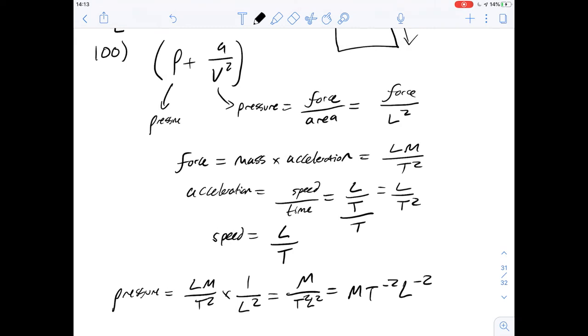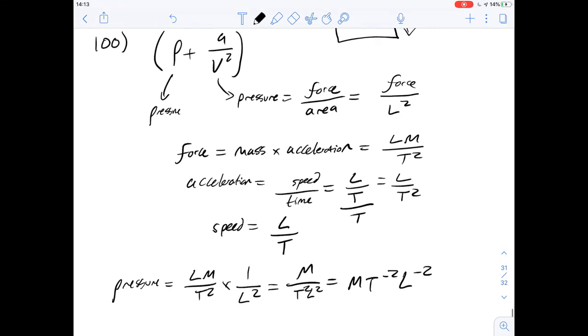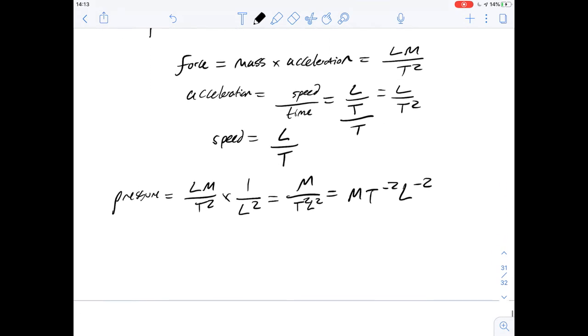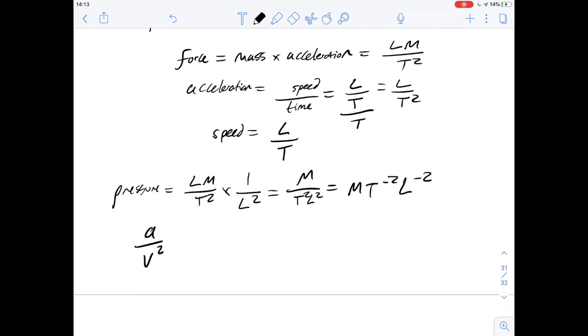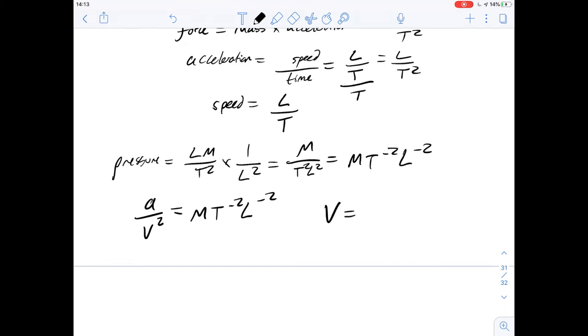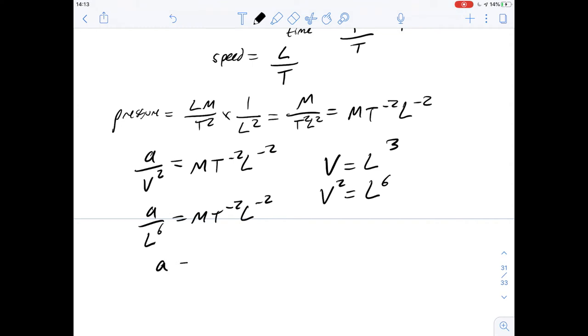So that's what pressure is. And that's what A over V squared could be defined as in terms of dimensions. But of course, we're dividing A by V squared. So we know that A divided by V squared can be defined by the units mass times the minus two length to the minus two. But V in itself, as we said, is a volume and can be defined as L cubed. So V squared is going to be L to the sixth.